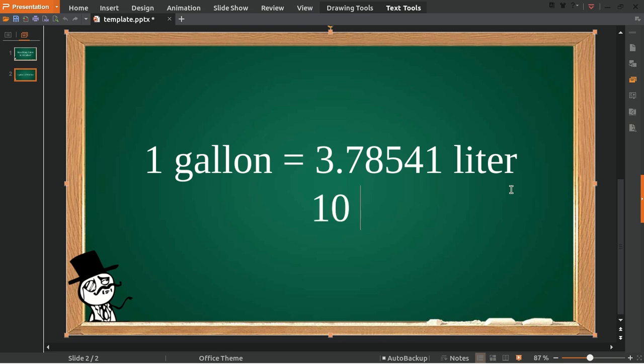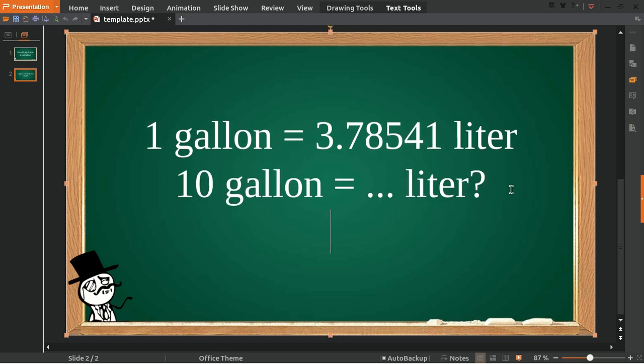For example, I want to know how much is 10 gallons in liters. To solve this problem, first we need to write this 10 over here, and then we multiply it with one gallon, because 10 gallons is equal to 10 multiplied with one gallon.